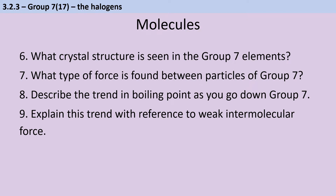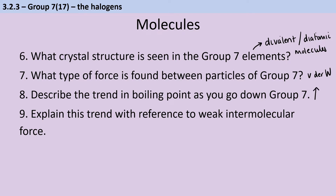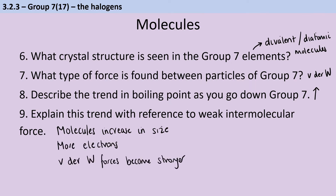In the group 7 elements, we see simple molecules. These have two atoms in them, so they're sometimes called diatomic. These molecules have van der Waals forces between them. As you go down group 7, the melting points and boiling points increase because the strength of those van der Waals forces increases. This is because the molecules are increasing in size and each have more electrons, giving stronger van der Waals forces that require more energy to overcome.